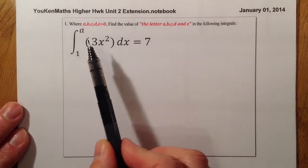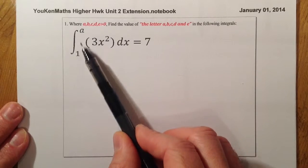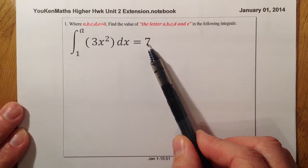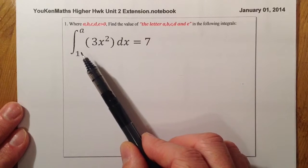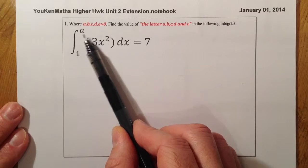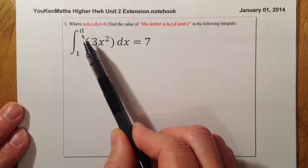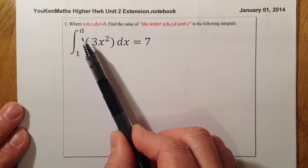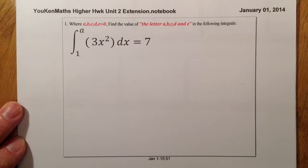Normally when we're integrating, we'd be integrating between two limits, and what we would do is integrate and then find the value. In these questions, all we're doing is working backwards a bit, and we're going to try to find a value that should be appearing in there. We know that the value is going to be greater than zero. The questions start easier from A to E, and then get more difficult as we go through.